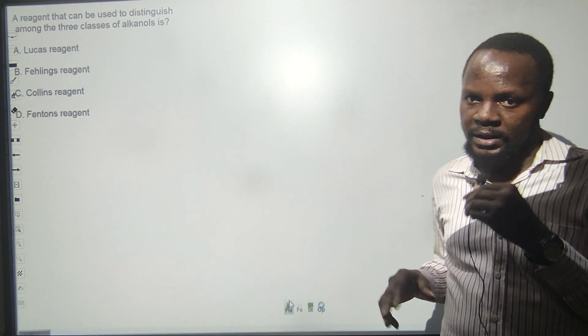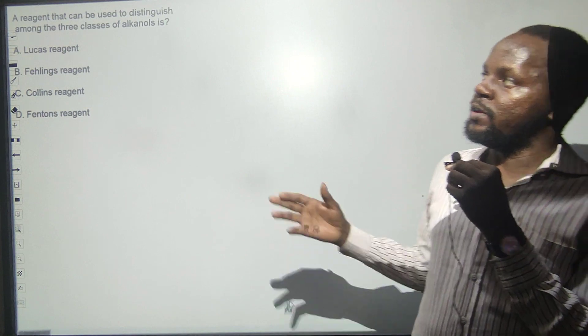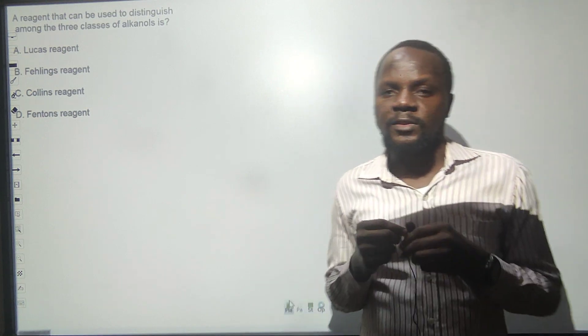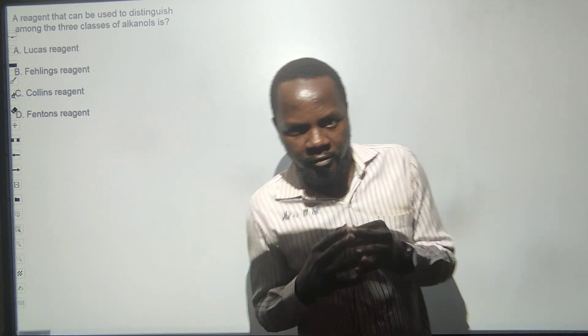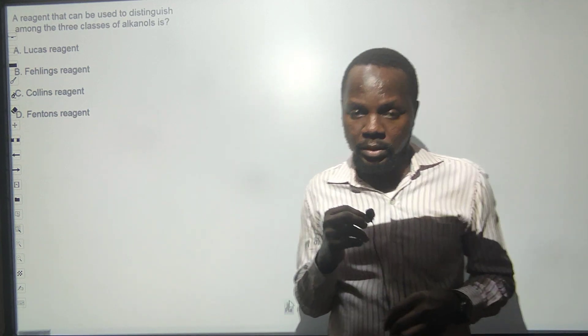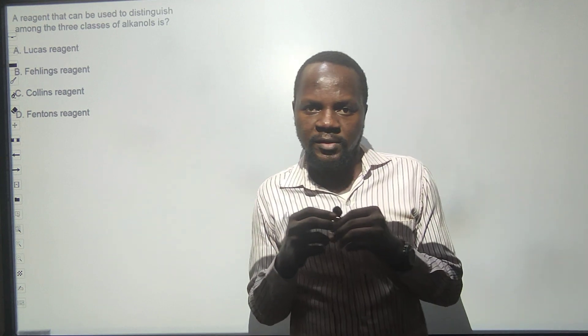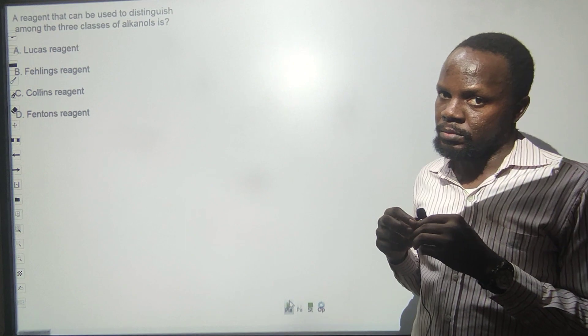For example, this first question says: the reagents that can be used to distinguish between the three classes of alcohols. Now we have different reagents, but for confirmatory test of alcohols, we use Lucas reagent.